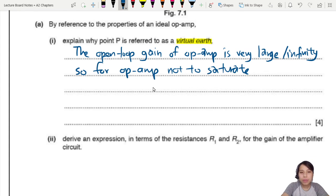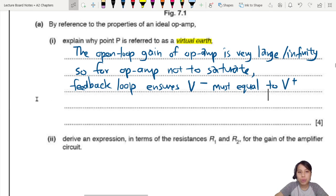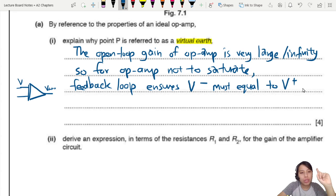The second point is, so for the op-amp not to saturate, the feedback loop that we add will ensure that V minus must equal to V plus. Now when the inputs are the same, then the op-amp is very happy. The gain is not going to go to infinity. So the point is you want to get V plus and V minus to be the same. So the feedback loop's job is to ensure that. Remember we draw the feedback loop.